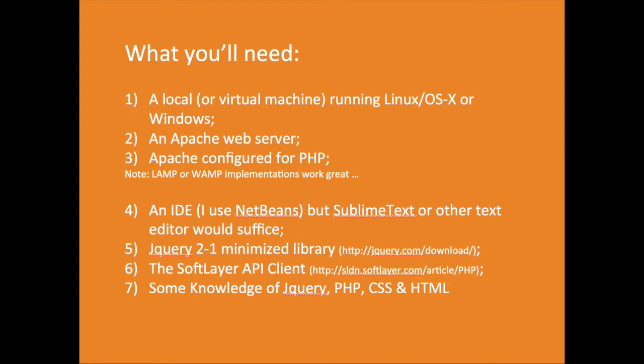What you need to have in place to follow this tutorial is a virtual machine running Linux or OSX, or on your local host you can develop it there — as I will be on Mac — and then move it over onto Linux on SoftLayer. You'll also need an Apache web server configured for PHP, as I'm going to be using the PHP API library. You can use Ruby, Java, C#, or Python, but I'm more a PHP guy, so I'm going to use PHP with Apache and a little bit of jQuery. Set up LAMP or WAMP as the basis of your local machine and you'll be ready to go. You can download the code as well.